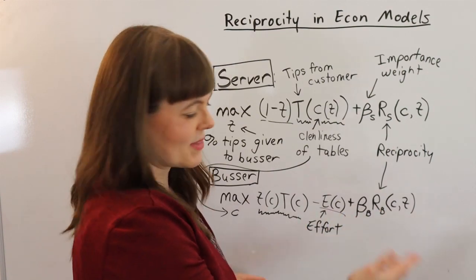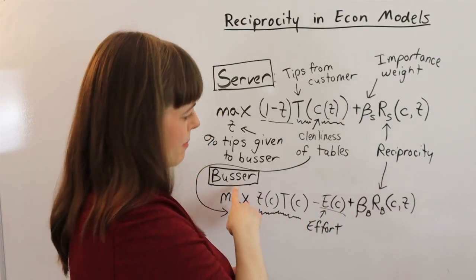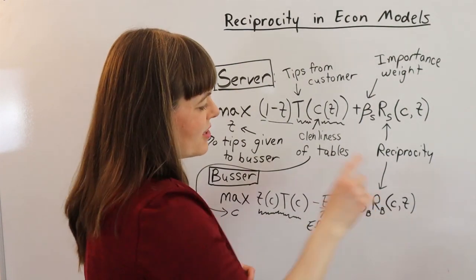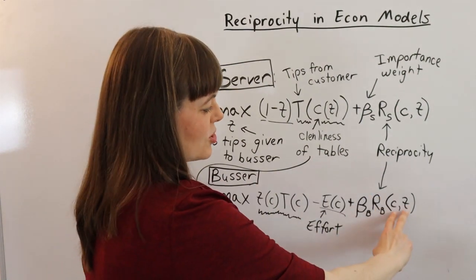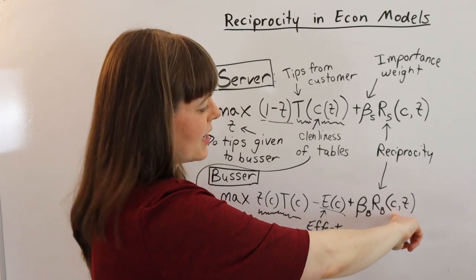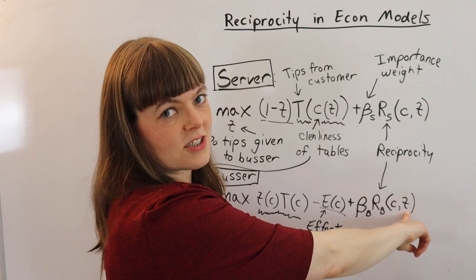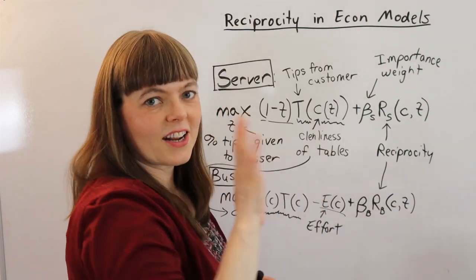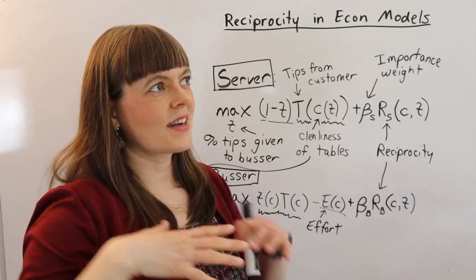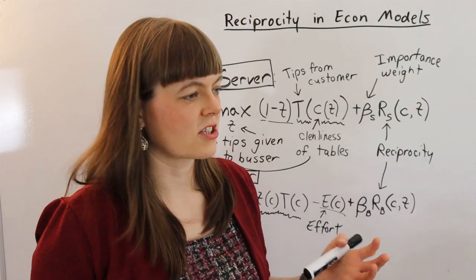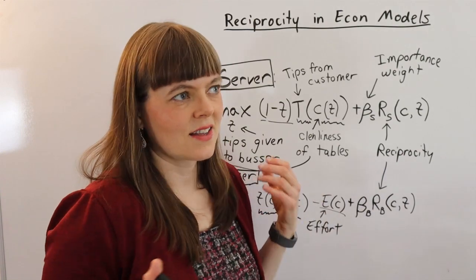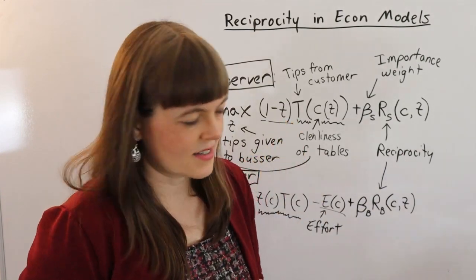And the same thing is going to be true down here where the busser has his own reciprocity term, his own importance weight on reciprocity. And the two things in that model are his behavior, his cleanliness of the tables, and her percentage of tips she gives him. I should note here that the cleanliness of the tables can encapsulate other behaviors, not just cleanliness, but responsiveness, timeliness, other things like that.